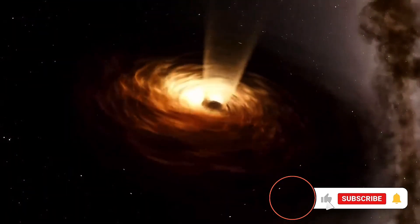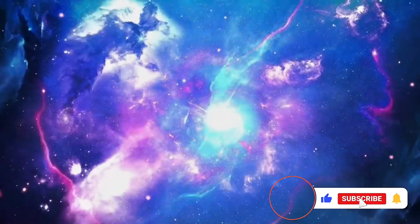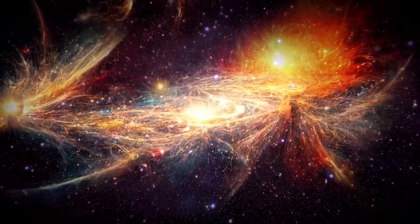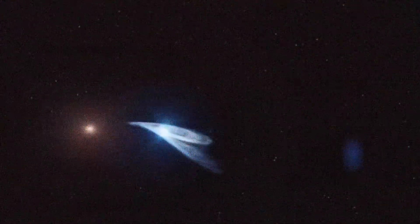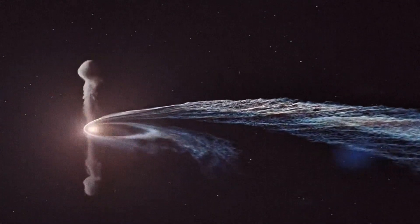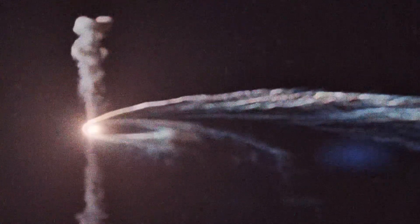Black holes are among the most enigmatic and fascinating objects in the cosmos, and to understand the cosmic paradox, we must first delve into their mysterious nature. A black hole is formed when a massive star collapses under its own gravity, compressing its mass into an infinitely small and dense point known as a singularity. Surrounding this singularity is the event horizon, a boundary beyond which nothing, not even light, can escape.